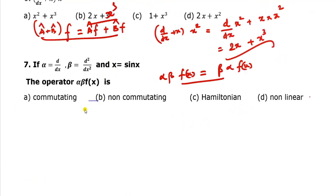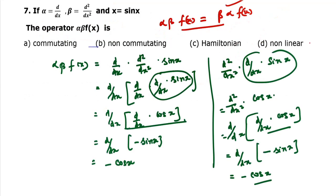Alpha equals d/dx. Applying alpha-beta to sin(x): first d²/dx² of sin(x) gives minus sin(x), then d/dx of minus sin(x) gives minus cos(x) — that is the left-hand side. For the right-hand side, beta-alpha: d/dx of sin(x) gives cos(x), then d²/dx² of cos(x) gives minus cos(x). Left-hand side equals right-hand side, so the operators are commutating.